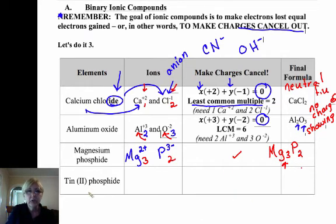Now tin can either be plus two or plus four. So we need a way in the name to communicate that information, and that's what that roman numeral two is. It tells us we have the tin plus two, as opposed to the tin plus four.